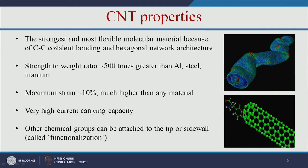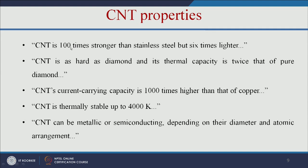Carbon nanotubes are the strongest and most flexible material due to C-C covalent bonding — 500 times greater strength than aluminium and steel, and 100 times stronger than stainless steel but 6 times lighter. Maximum strain is more than 10%, higher than any material, and they are harder than diamond. They have very high current-carrying capacity and thermal stability. Depending on the arrangement of atoms, they can be metallic or semiconducting. Functional groups can be added through a process called functionalization.